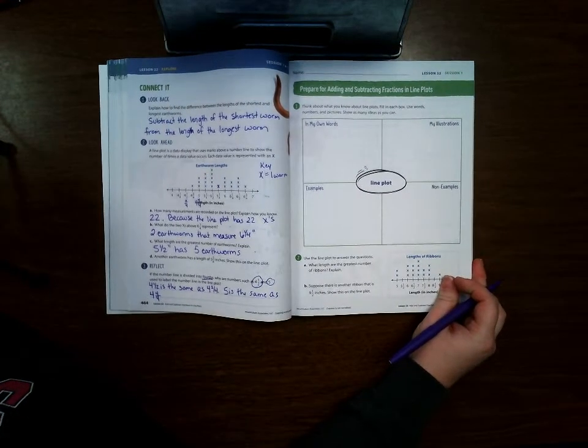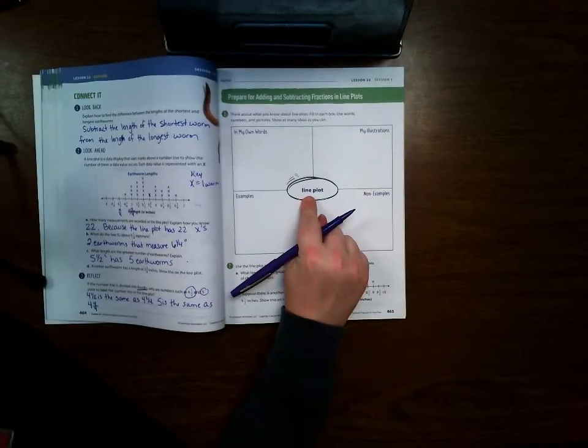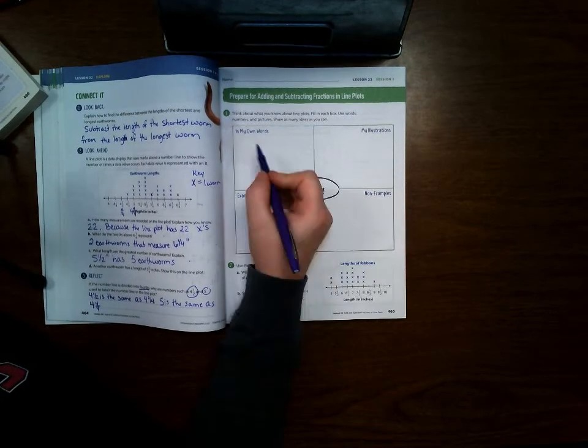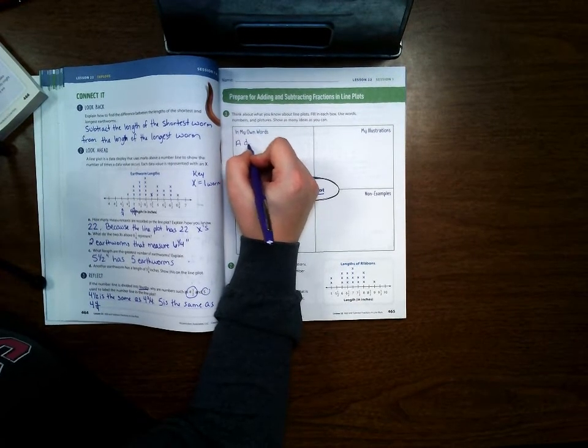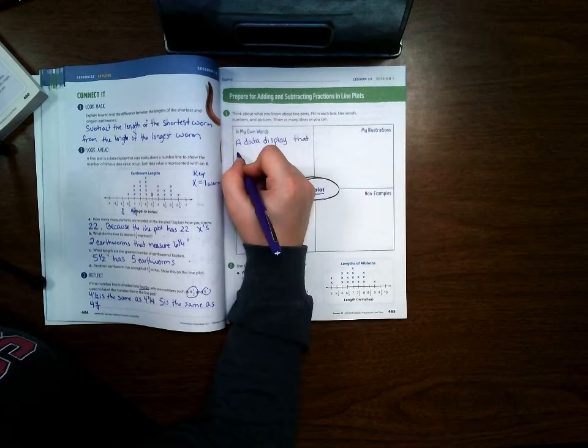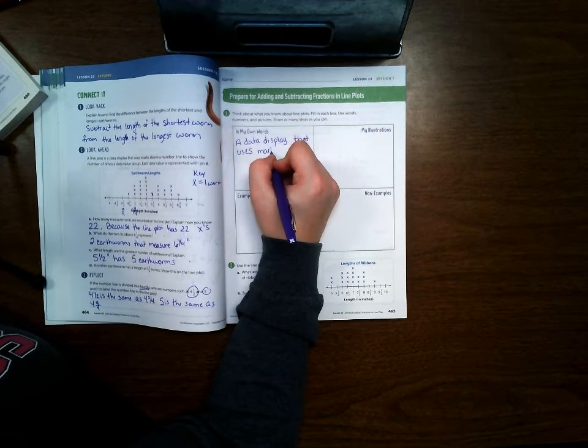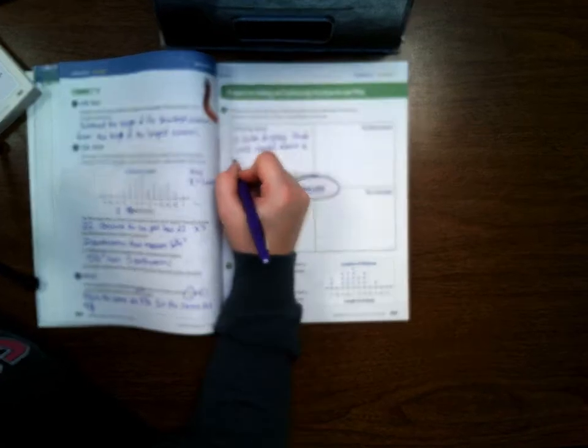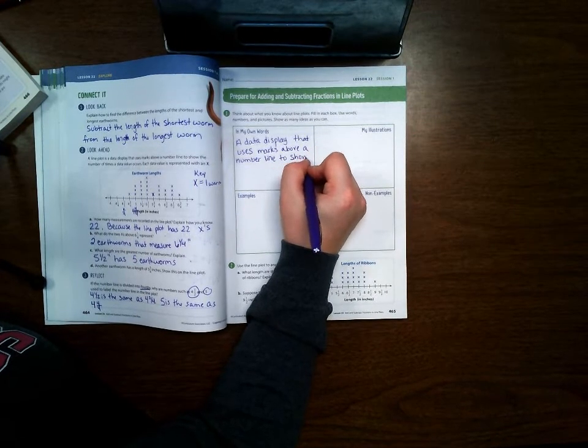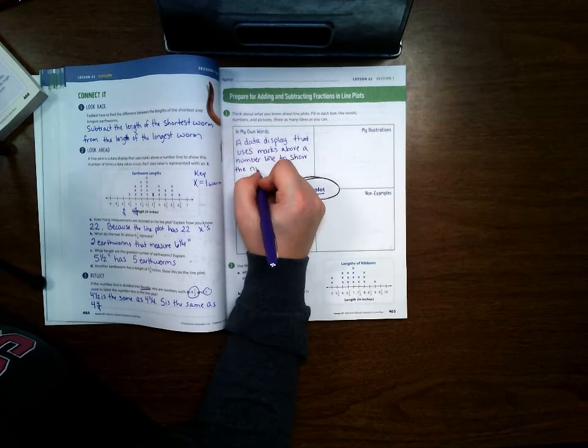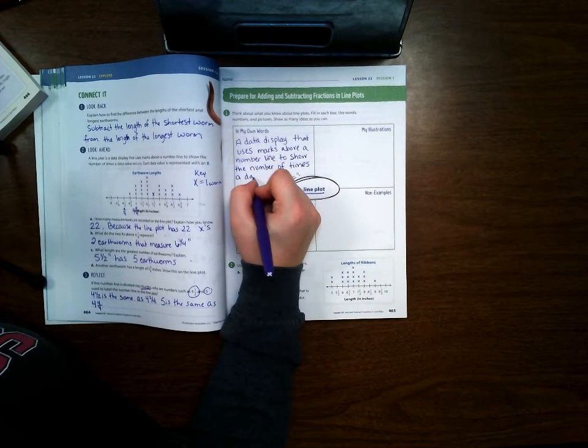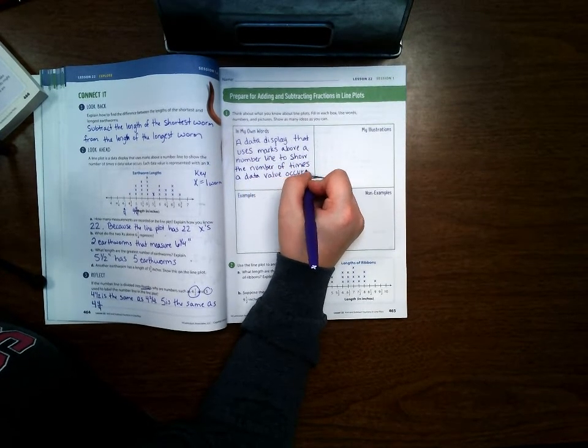Let's go ahead and turn to page 465. On 465 you see the word line plot. This is one of the math vocabulary words that you will need to know and it will definitely be on map testing. So, in my own words, what is a line plot? Well, it's a data display that uses marks above a line, a number line, to show the number of times a data value occurs.